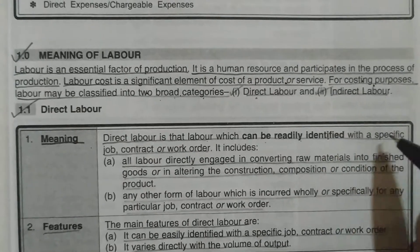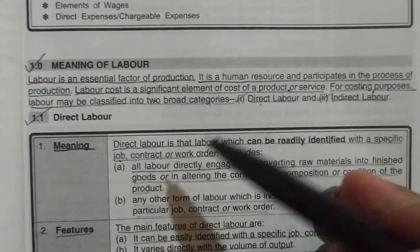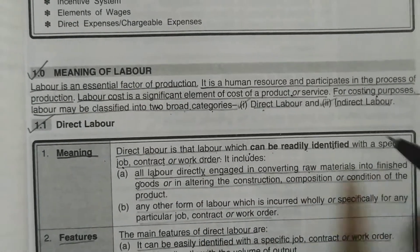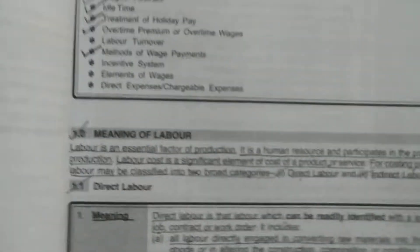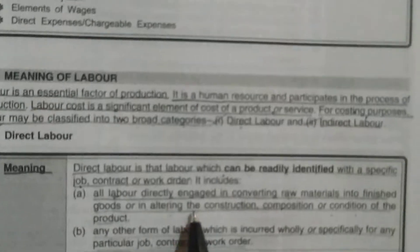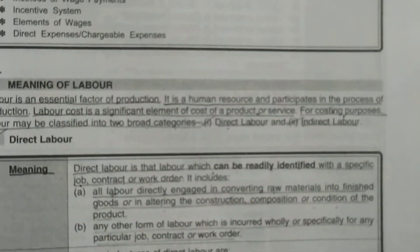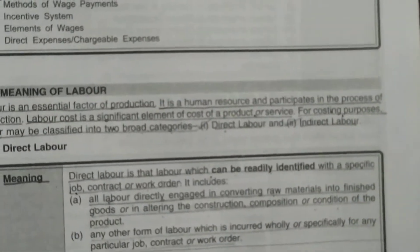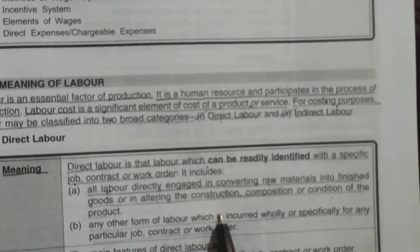Direct labor is that labor which can be readily identified with a specific job, contract, or work order. It includes all labor directly engaged in converting raw materials into finished goods, or altering the construction, composition, or condition of the product. For example, laborers working in construction to build a road, or human beings working in a factory to convert raw material into finished goods.